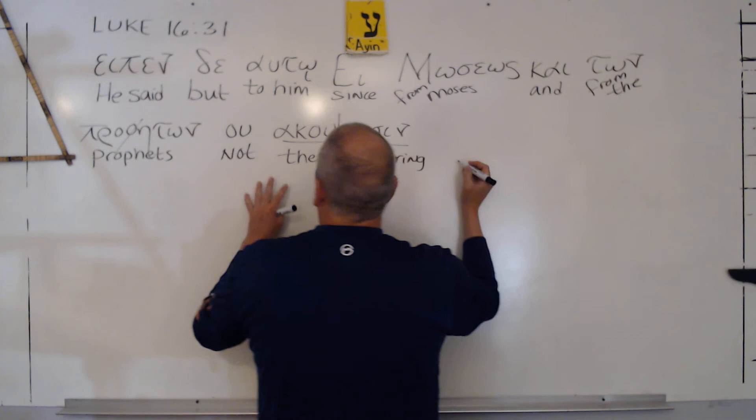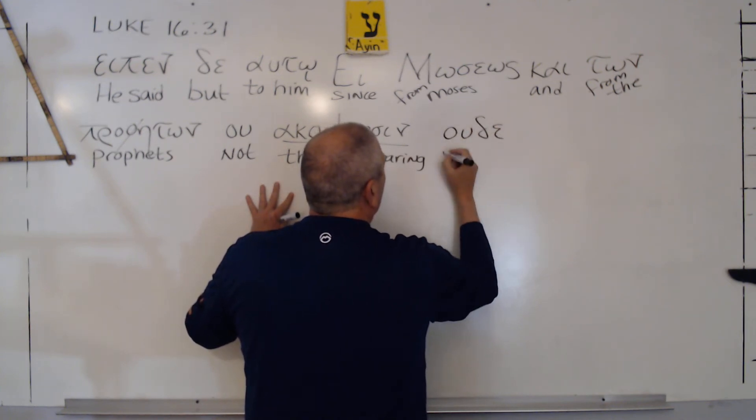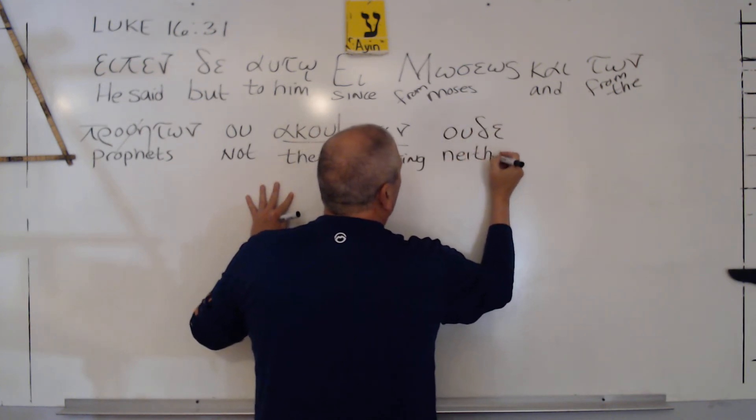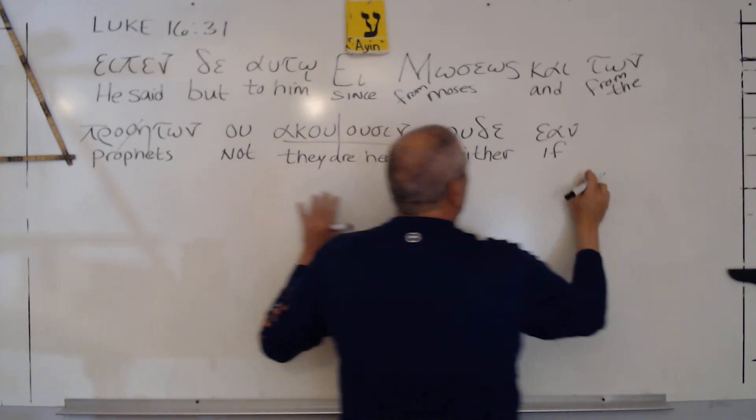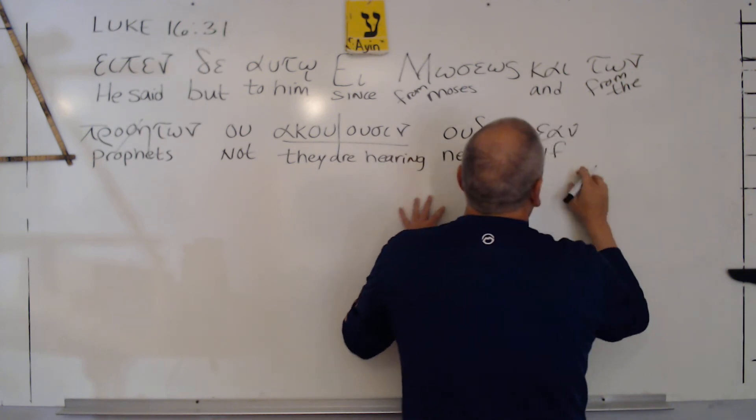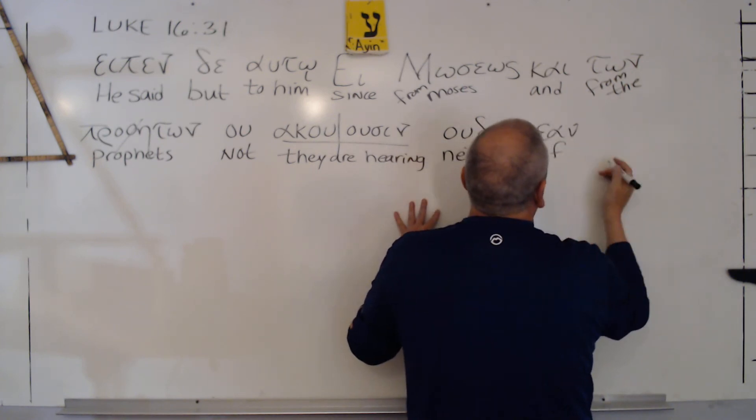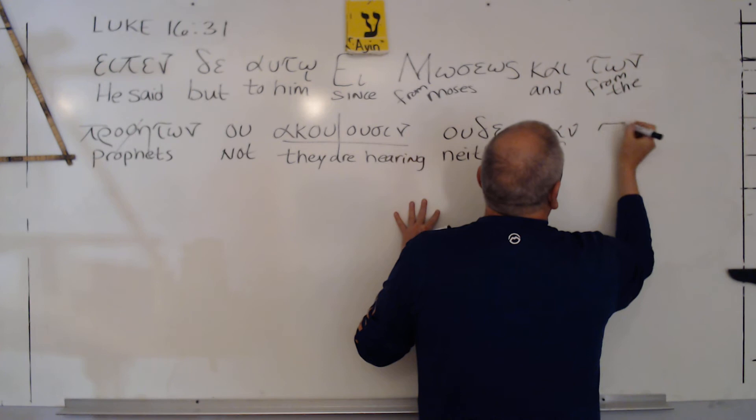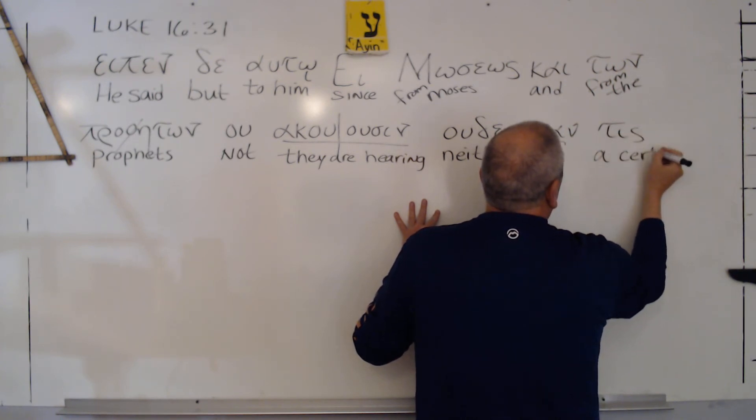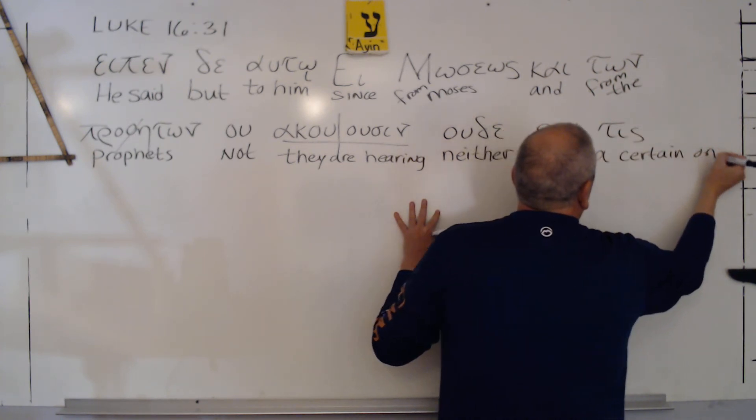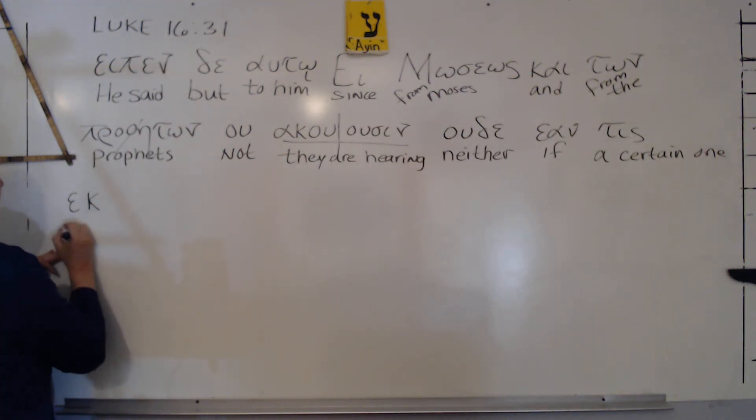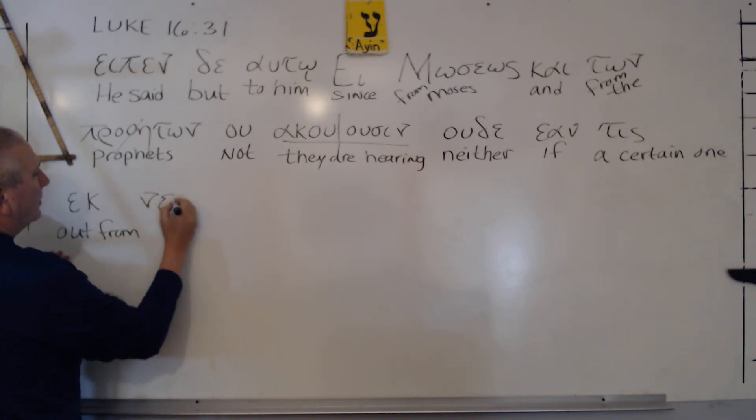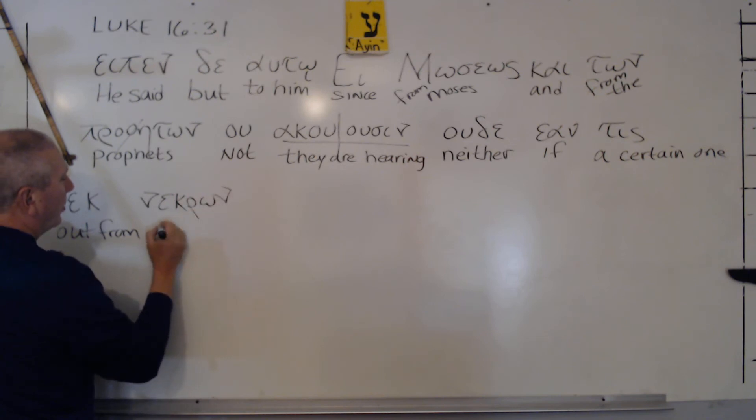Uda, he says, Uda, neither, unconditional if, and it is possible, if tease a certain one, there we go, a certain one, ek, out from, and then Necron, corpses.